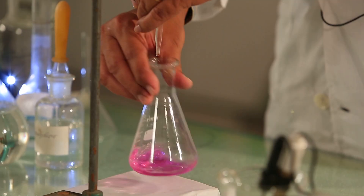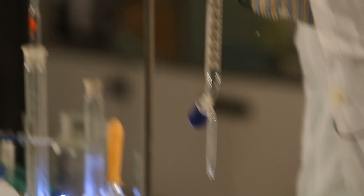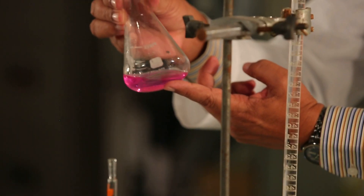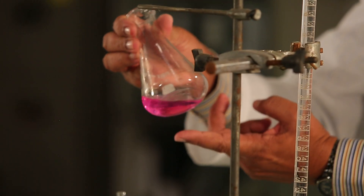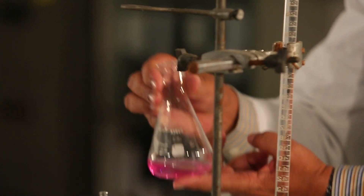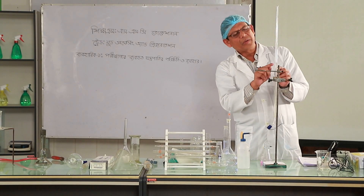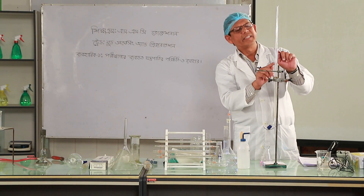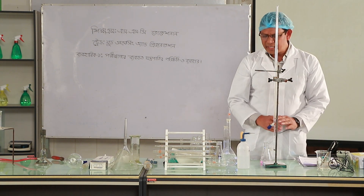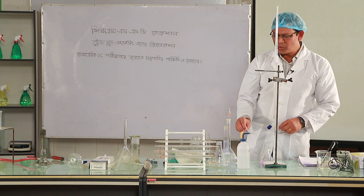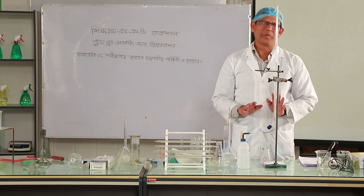Then you can see that a pink color has appeared, or it has become a pink color. If you want to make a pink color, we will close this, then we will make a reading. When we write that reading, we will make a calculation.